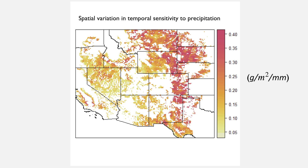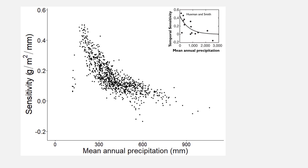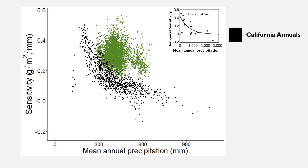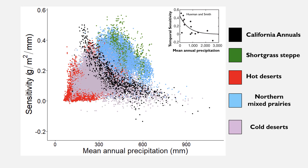I want to show the raw data plotted on a bivariate plot. Each point reflects data from a pixel, with sensitivity on the y-axis and mean annual precipitation on the x-axis. We can decompose all these data into vegetation types — in the corner is the previous across-vegetation data. For California annual systems we see what we may expect: a decreasing function. Introducing the other vegetation types — short grass steppe, hot deserts, northern mixed grass prairies, and cold deserts — reveals substantial variation.